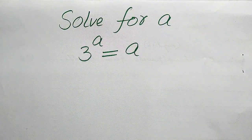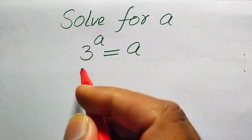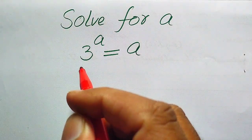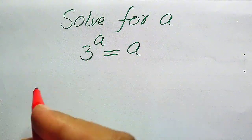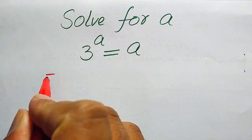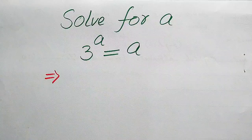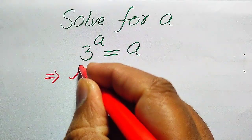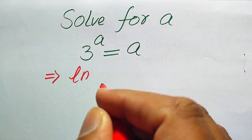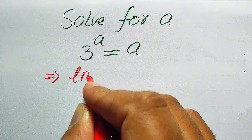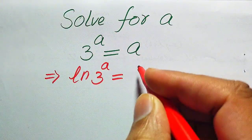Now we move towards the solution. This is an exponential equation where the variable appears in the exponent. First, we need to remove the variable from the exponent. For this, we take the natural log on both sides. When we apply the natural log, it is written as log of 3 to the power of a equals log of a.